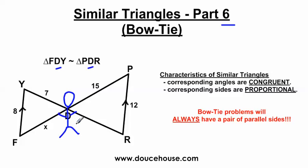Now, keep in mind here, this person's kind of small for this big old bow tie. But that's the idea here. And since this is a similar triangles problem, these two triangles have these characteristics where corresponding angles are congruent and corresponding sides are proportional. But it's a bow tie problem. And so there's an additional feature here. It says bow tie problems will always have a pair of parallel sides.